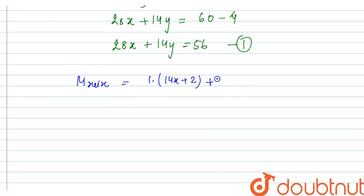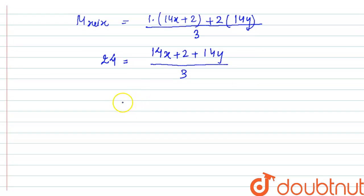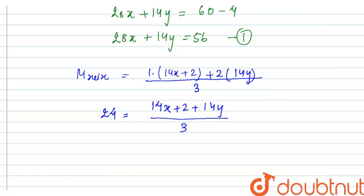Now here the value is equal to 24. Now this we will be solving: 14x + 2 + 14y upon 3. Now from this particular equation, now sorry, it will not be 14y but it will be 28y.